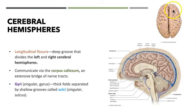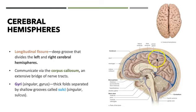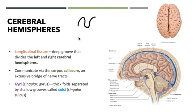When we look at the brain, it appears very squiggly. The convoluted parts sticking up are called gyri (singular: gyrus), and the depressions sitting in between them are called sulci (singular: sulcus). Think of it as peaks and valleys — the gyri are the mountains and the sulci are the valleys.